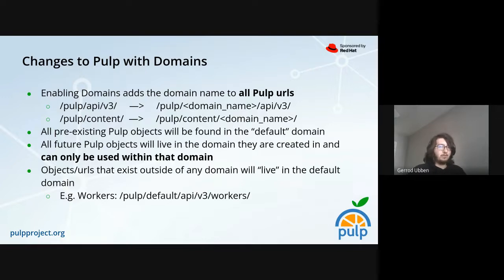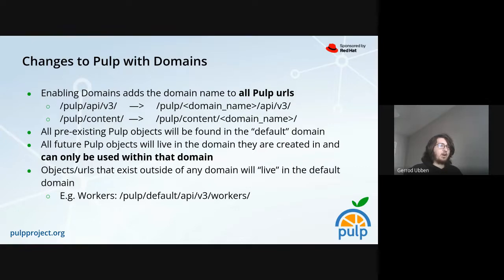This is a strict isolation requirement. Even if you're an owner of multiple domains, you cannot use objects across those domains. So if user Alice owns domain foo and bar, and in foo she has remote A, she cannot use remote A to sync her repositories in bar — she's going to have to create a new remote in domain bar.